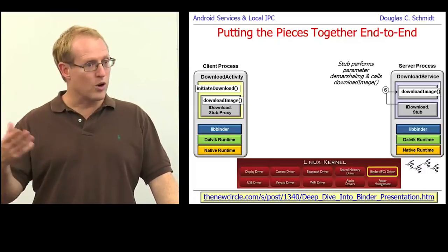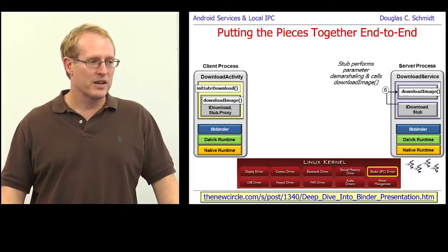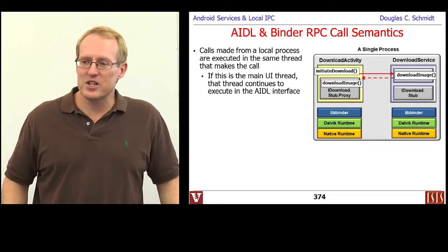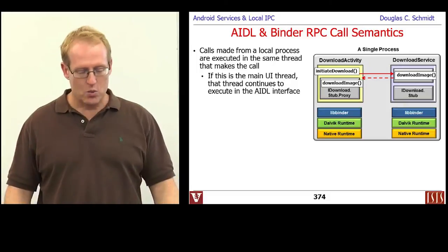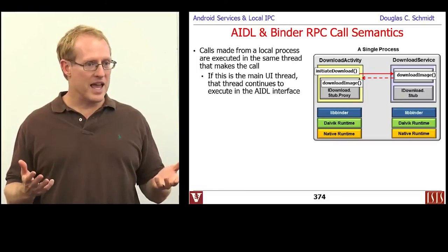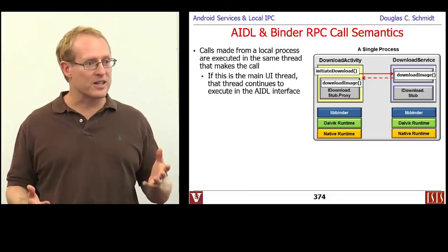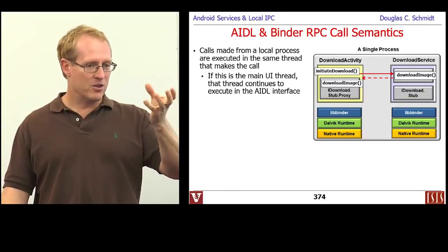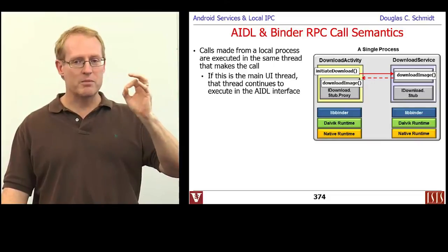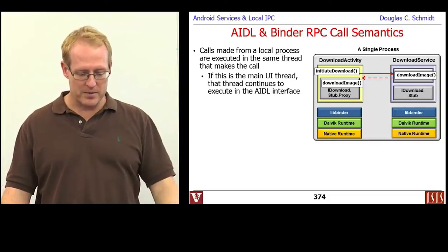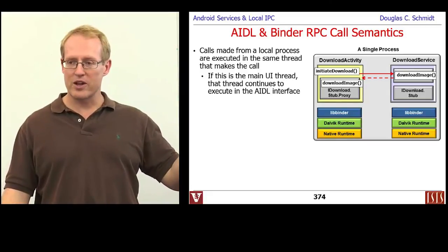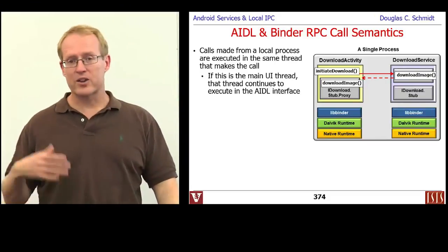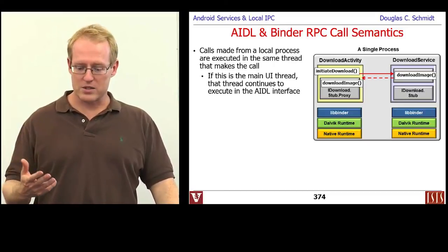There's a very nice article that gives more information about binders and shows lots of examples and more code to look at. Something important to discuss is the issue of call semantics. What are the appropriate call semantics for the AIDL and binder RPC mechanisms? If you're in the same address space and invoke an operation through a proxy, that ends up being a direct method call to the receiver in the same address space. So if you're calling from the main thread of control — the UI thread — the call will actually run in the main thread of control, borrowing the thread to run the request.